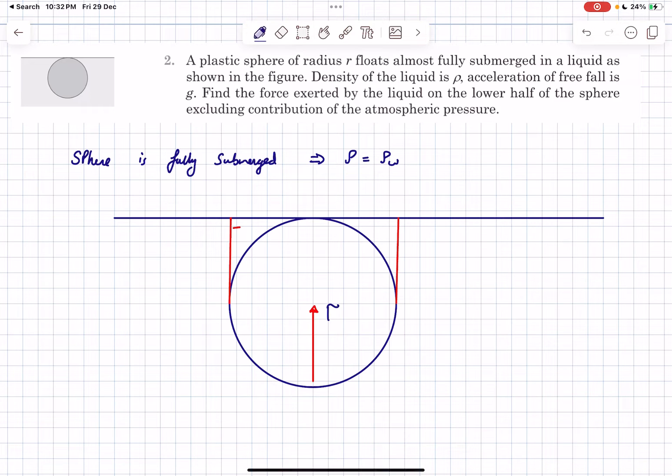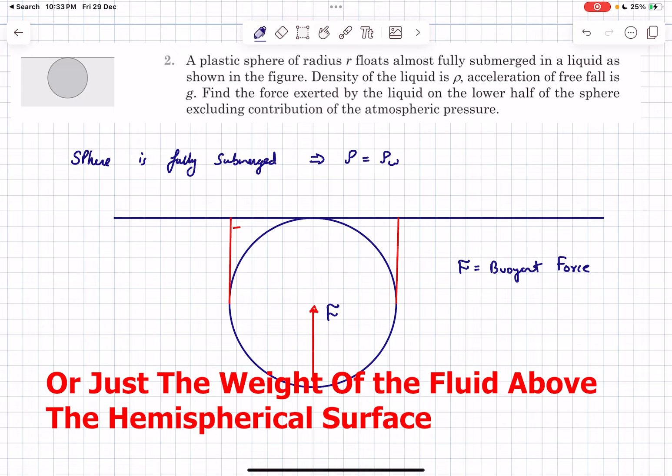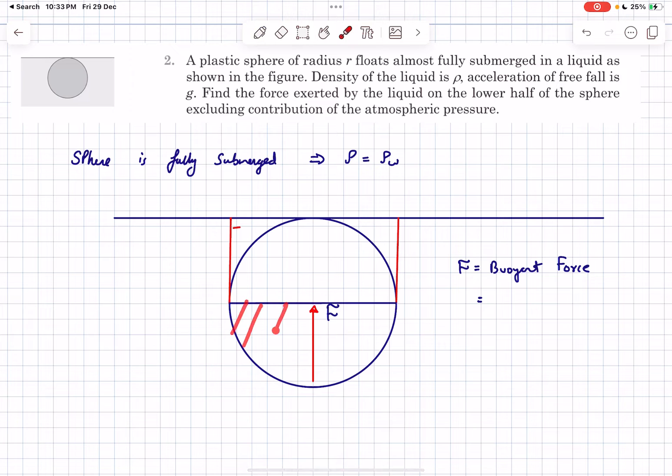Let's name the upward resultant force as F. Now F is simply going to be the buoyant force that acts on the fluid plus the hemisphere system, so all we have to do is determine the volume. The volume of this part is going to be two-thirds of a sphere, that is 2/3 π r³.